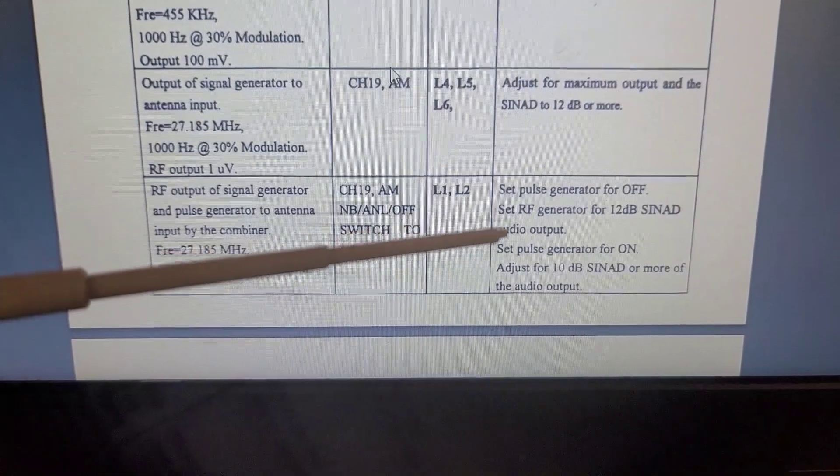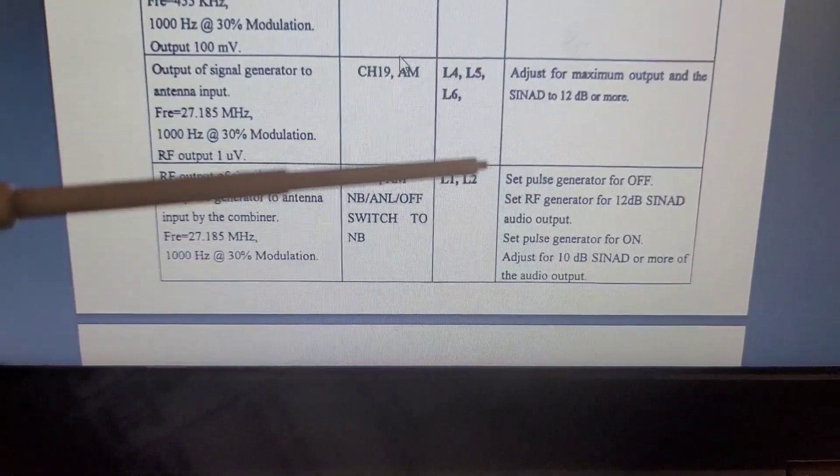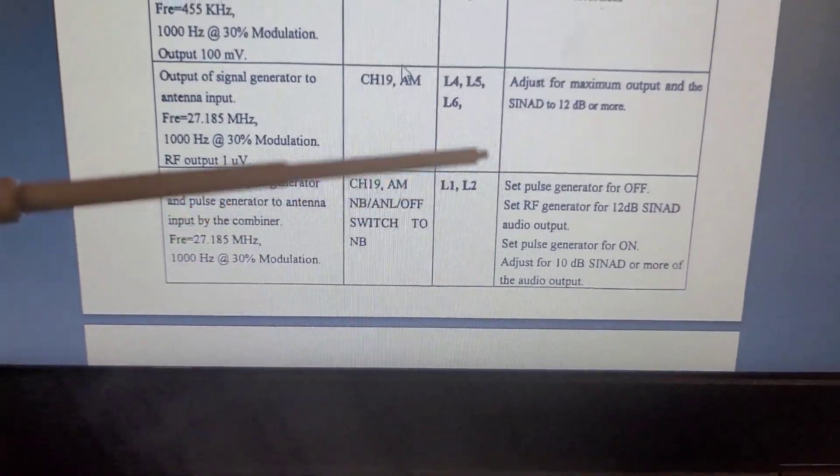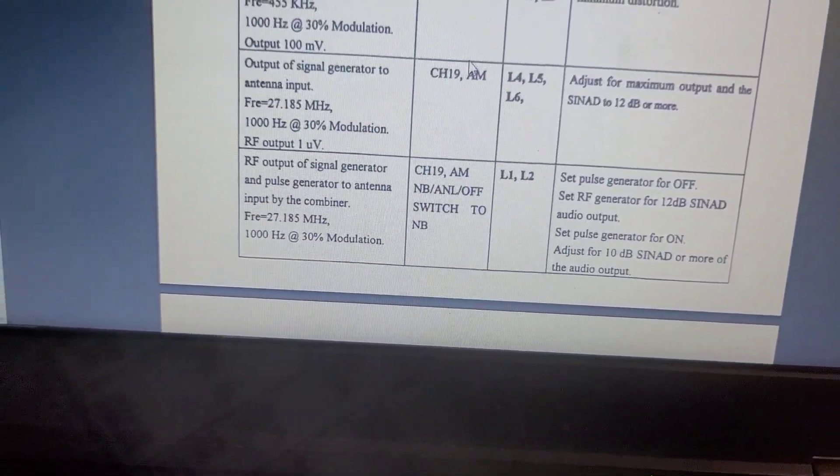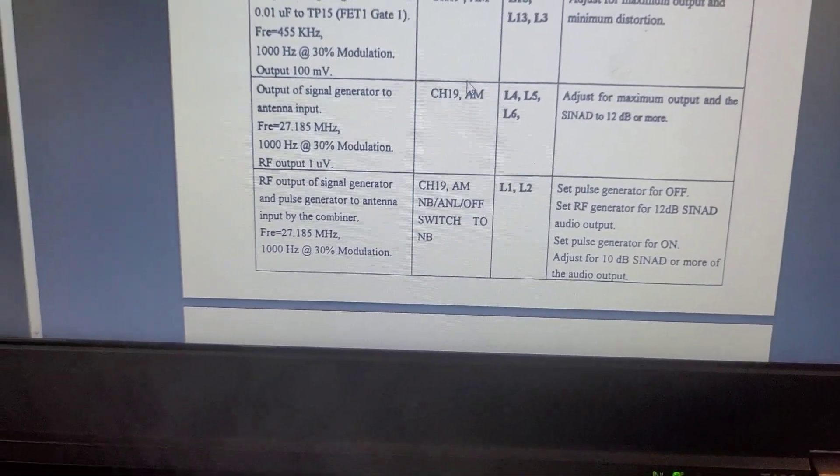There's actually two steps here. And if you can adjust for more than 12 dB of SINAD, even better—it just means your radio is that much more sensitive.